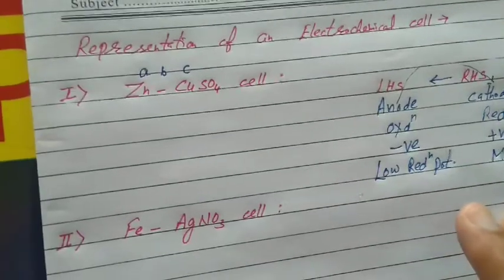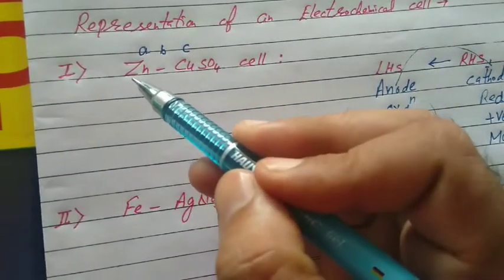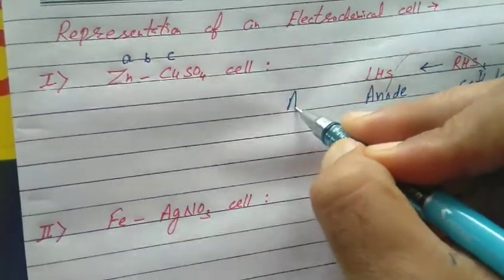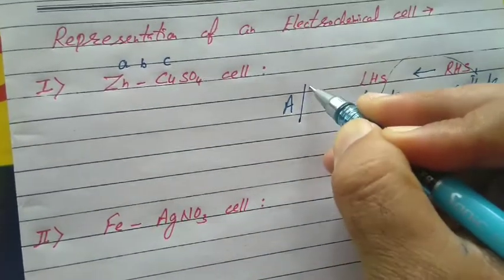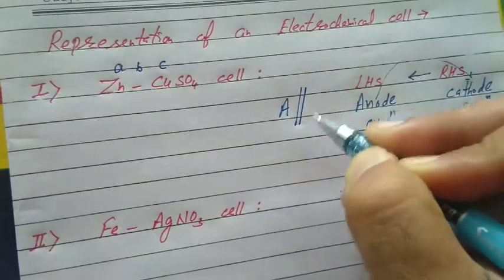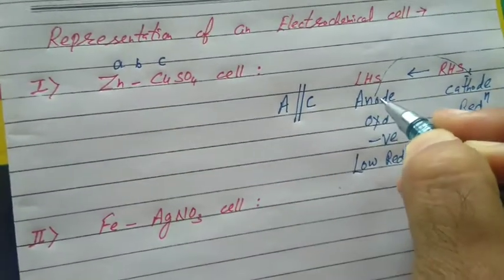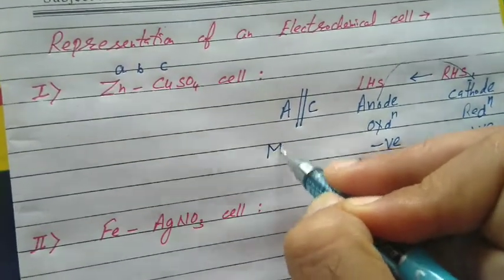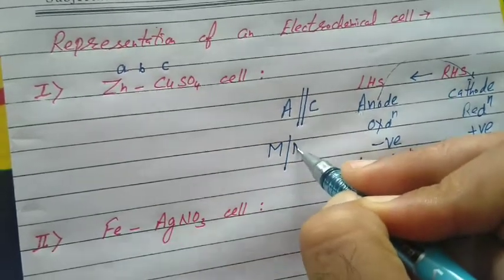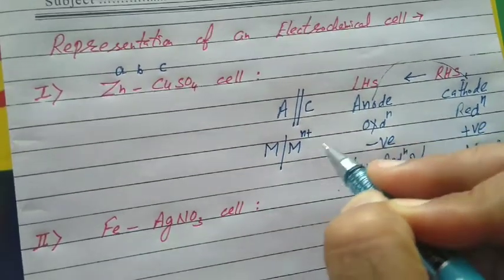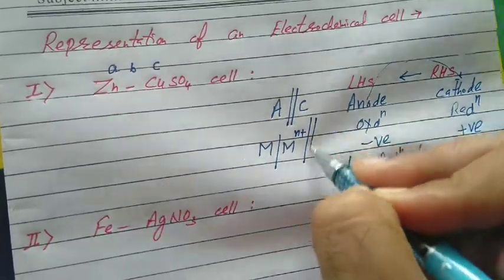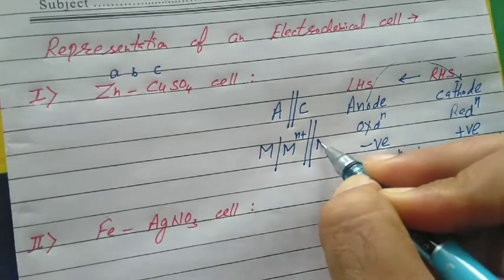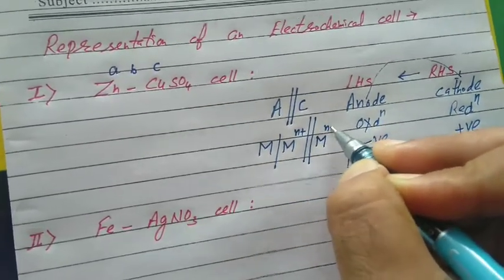How to represent electrochemical cells? Friends, A, B, C: anode, then two vertical lines — that's the symbol of the salt bridge — then cathode. What happens at anode? Oxidation. At anode, we write metal first and then metal ion. What happens at cathode? Reduction. At cathode, we write metal ion first and then metal.